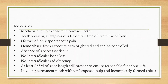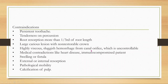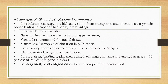Contraindications of pulpitomy: persistent toothache, meaning the infection has spread to the radicular pulp; tenderness or purification where infection is likely present at the periapex; root resorption involving more than one-third of root length; large caries lesion with non-restorable crown; highly viscous, sluggish hemorrhage that is not bright red and is uncontrollable; medical contraindications such as heart disease or immunocompromised patients; presence of fistula; presence of resorption, either external or internal; mobility; and calcification of pulp.